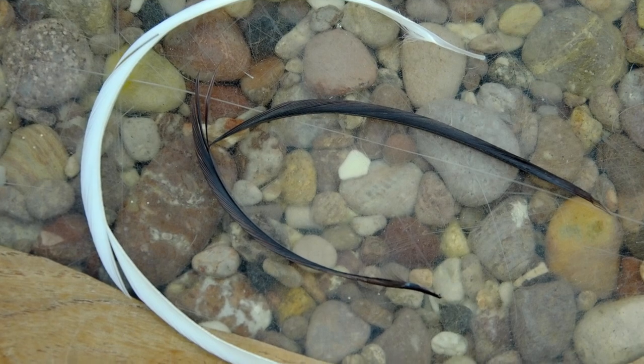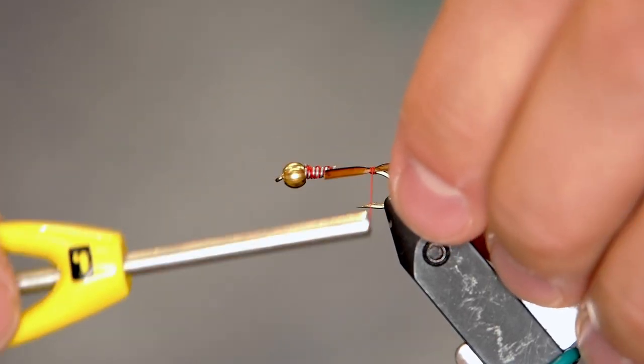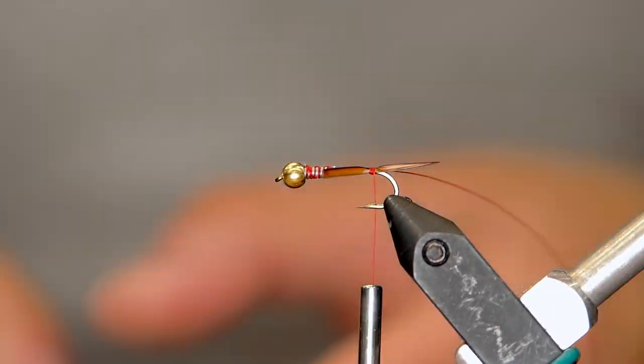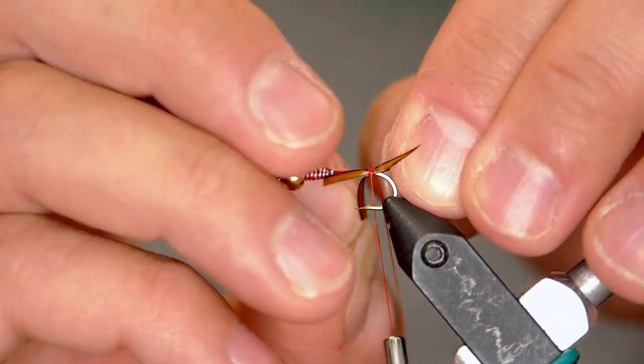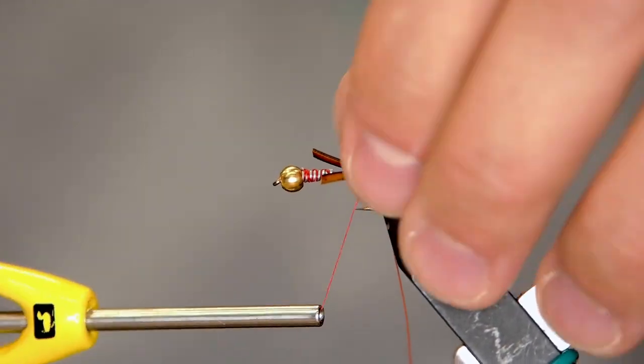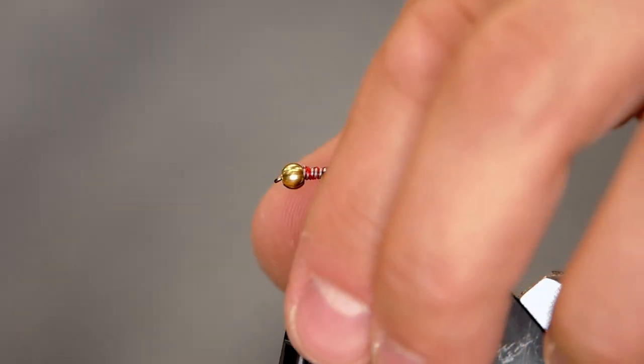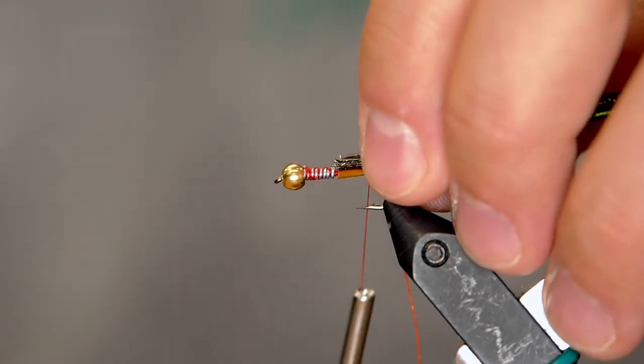Now, Prince Nymphs use goose biets and classically you'd use brown goose biets. Now I'm tying these on opposite sides of the hook facing away and then they naturally, with their curve, splay out away from the hook and I find that works really well. Trimming it so that it will tuck right behind the lead wraps.